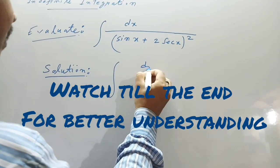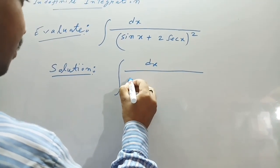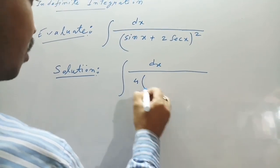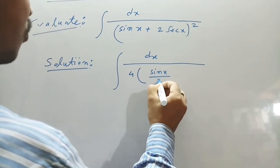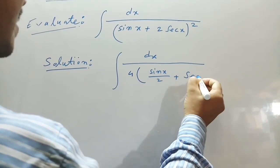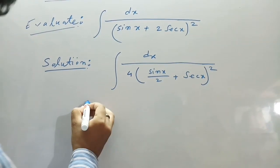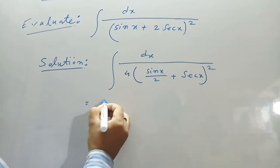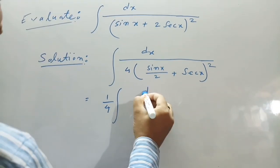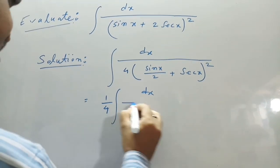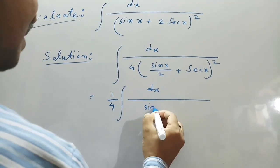The solution: integral of dx divided by — taking 4 common — (sin x/2 + sec x) squared, which equals 1/4 times the integral of dx divided by (sin x/2 + sec x) squared.